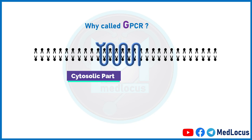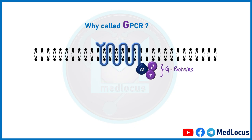These receptors are called GPCRs because the cytosolic part of these receptors is linked to heterotrimeric G-proteins. Through these G-proteins, they transfer signaling into the cells. G-proteins recognize activated GPCRs and then relay their messages to produce cellular effects of the ligand. Trimeric G-proteins have three subunits: alpha, beta, and gamma.